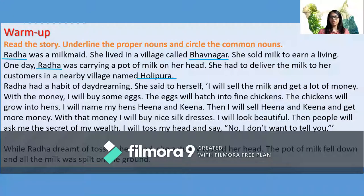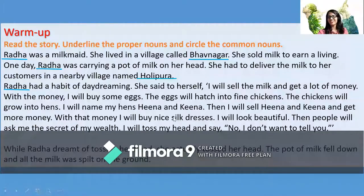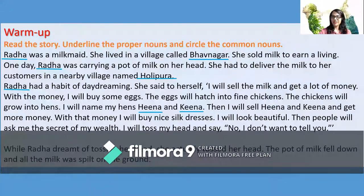'Radha had a habit of daydreaming. She said to herself: I will sell the milk and get a lot of money. With the money I will buy some eggs. The eggs will hatch into fine chickens. The chickens will grow into hens. I will name my hens Hina and Kina.' Names are occurring here, so without giving it a second thought we underline Hina and Kina — they are proper nouns. 'Then I will sell Hina and Kina' — again, Hina and Kina are proper nouns.